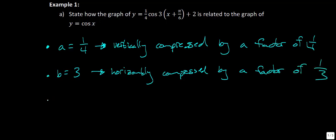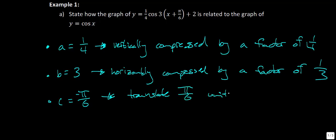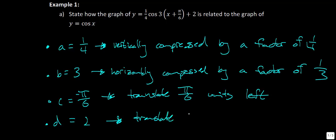The last two are fairly easy. In this case c is equal to negative pi over six, and so that is going to translate pi over six units. Because it's a plus in the expression, we go in the opposite (negative) direction, so we'd say left. And d is equal to two, so we would say this is going to translate two units upward — we don't have to worry about doing the opposite here.